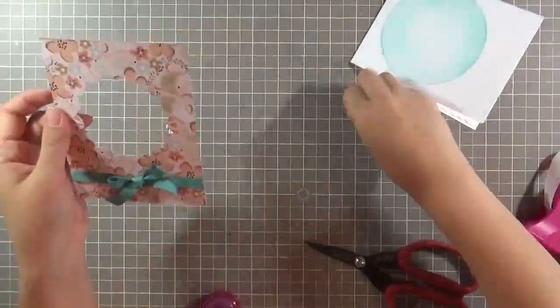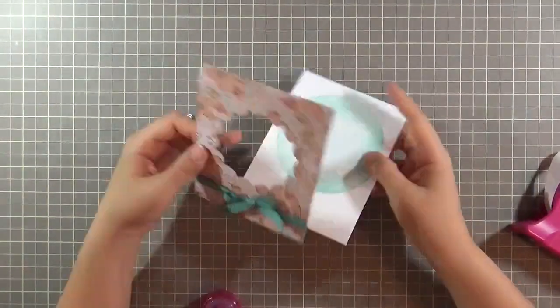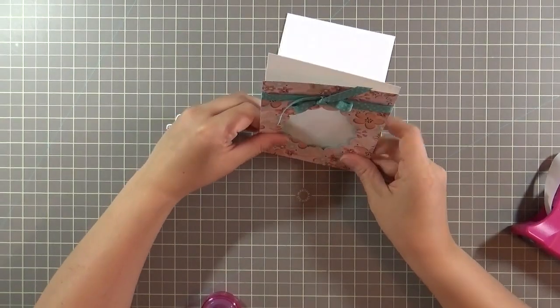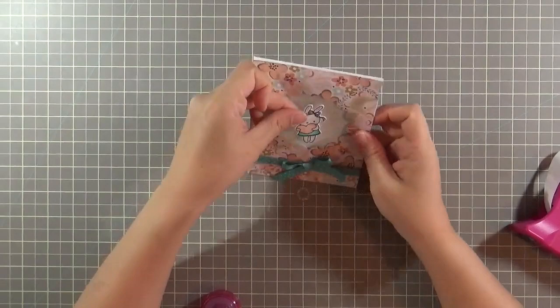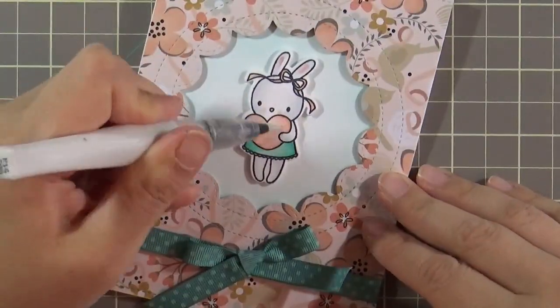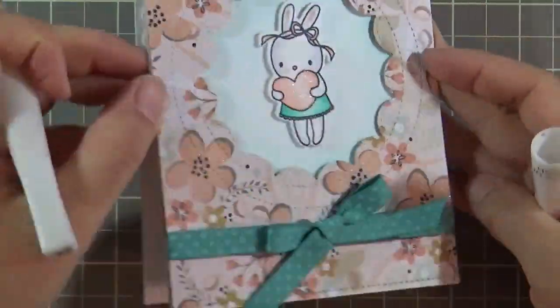And then I'm using the foam adhesive. I'm going to peel all of that up and just line it up perfectly so that it fits on the front of the card. And the last thing I'll do is place the Pix Rabbit who's holding the heart in the center with foam adhesive and adding some Wink of Stella on all the flowers and the heart. I also put it on the inside of the card as well.